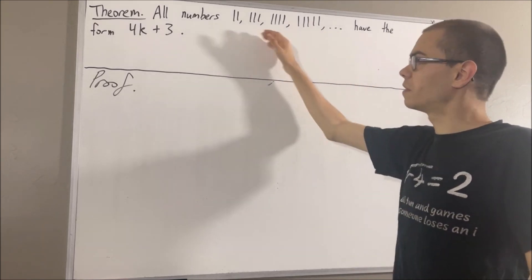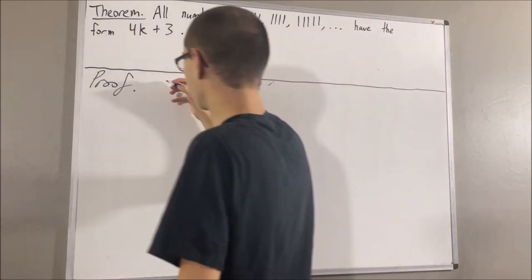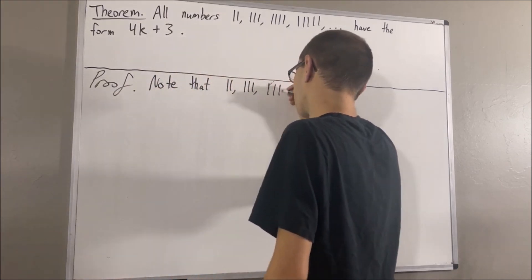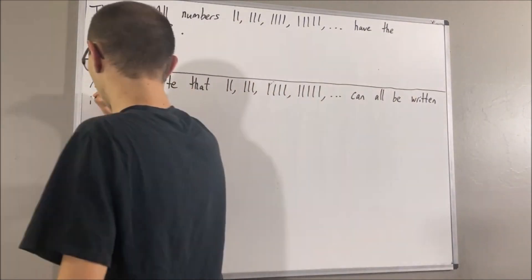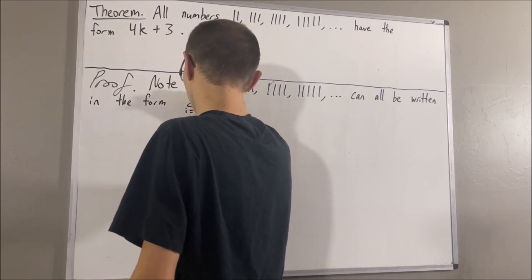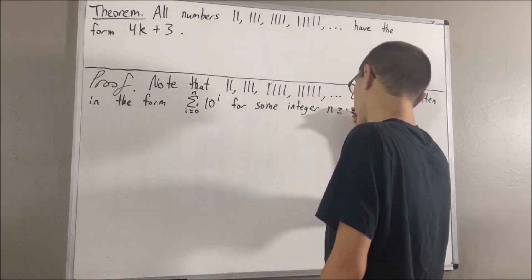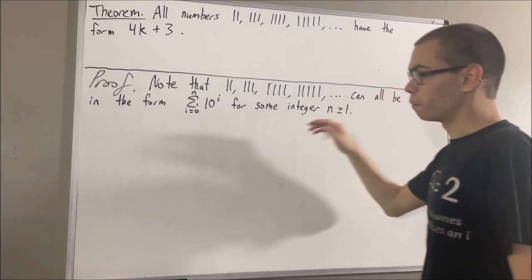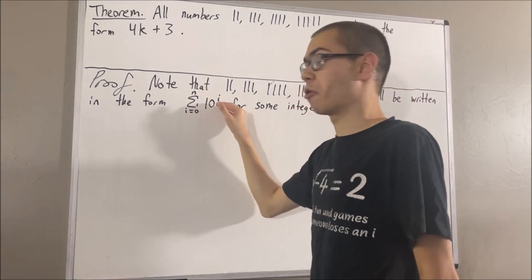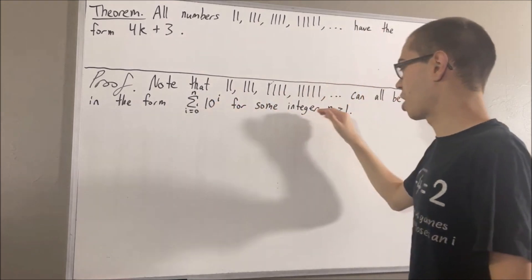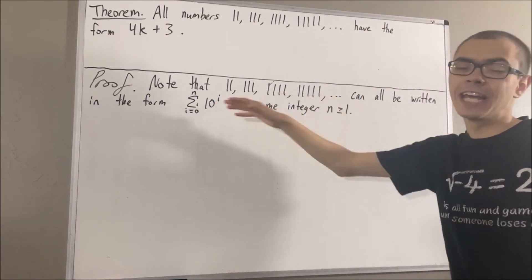Now all of these numbers can be written in the following way. They can all be written in the form: sum from i equals 0 to n of 10 to the power of i, for some integer n greater than or equal to 1. So we're going to take this for granted.